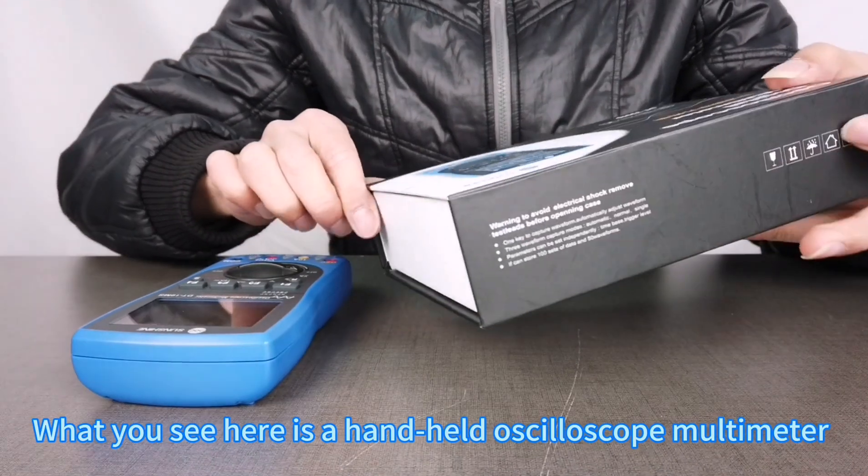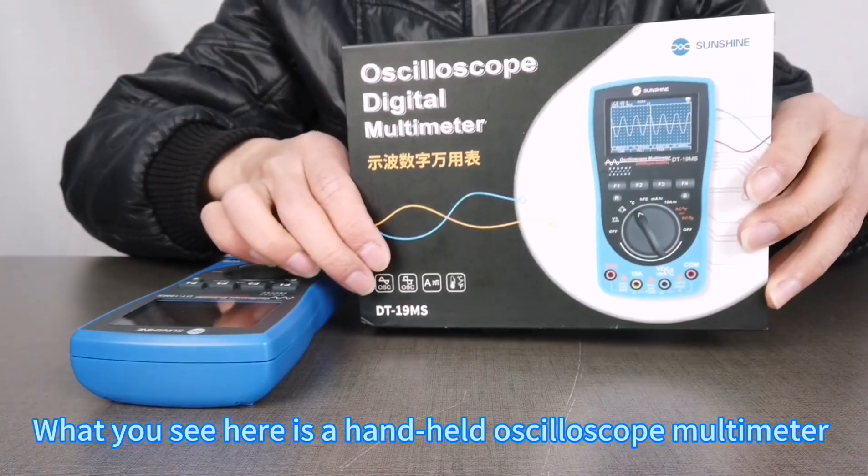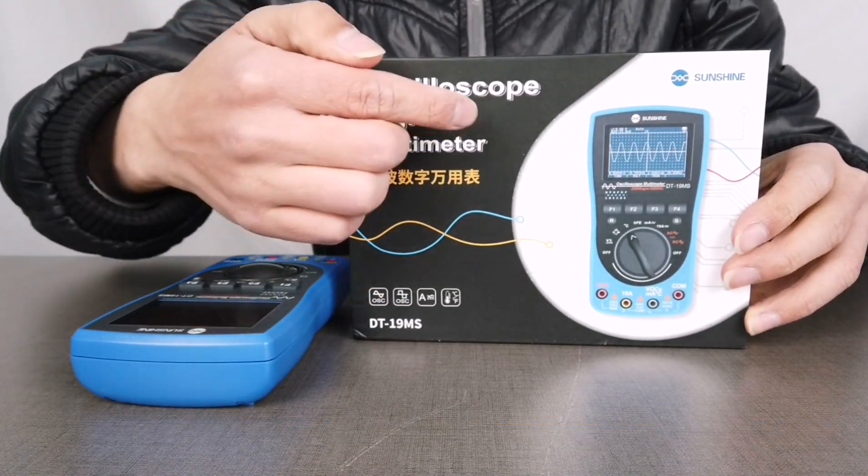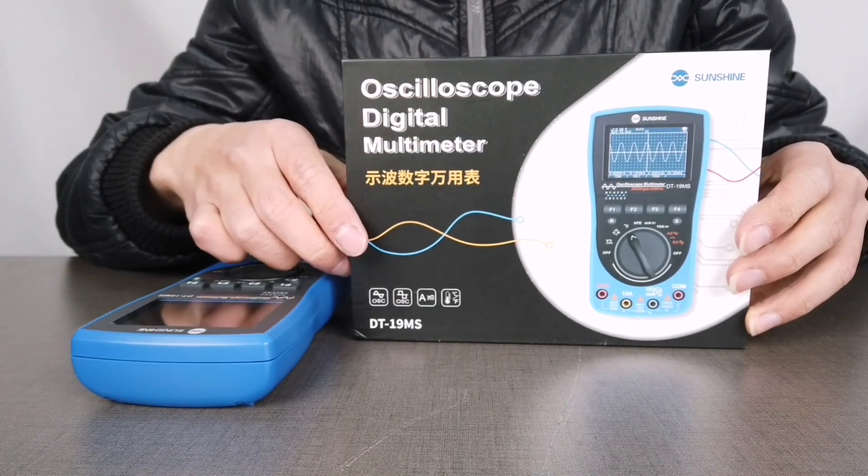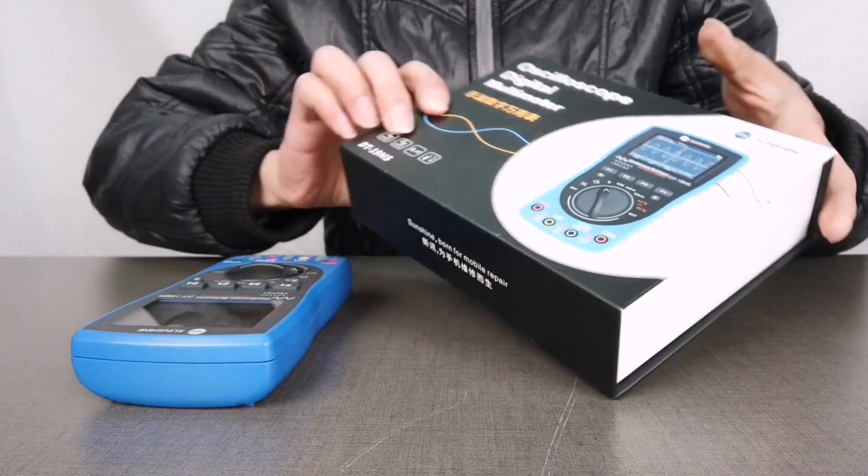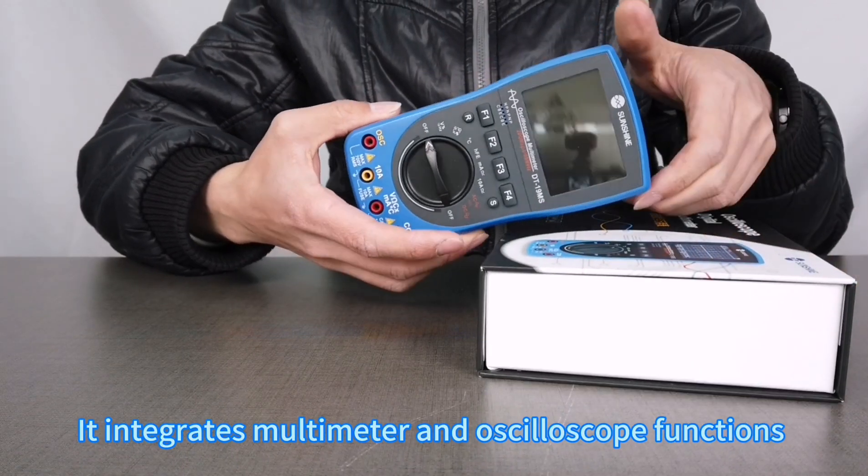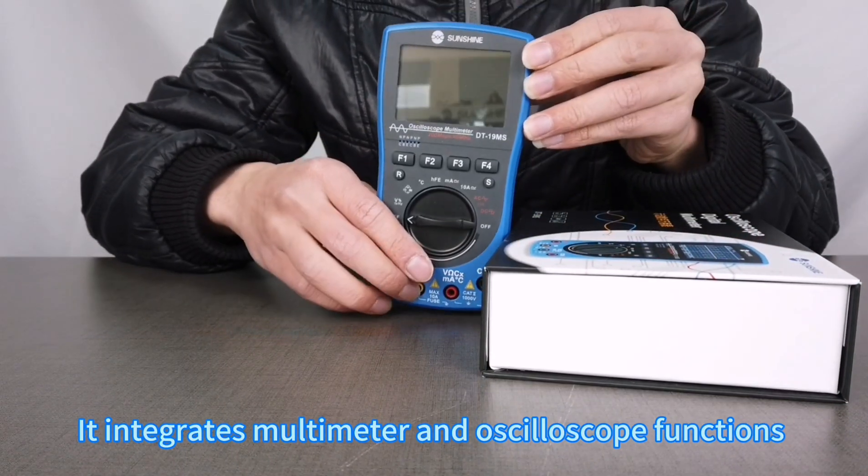What you see here is a handheld oscilloscope multimeter. It integrates multimeter and oscilloscope functions.